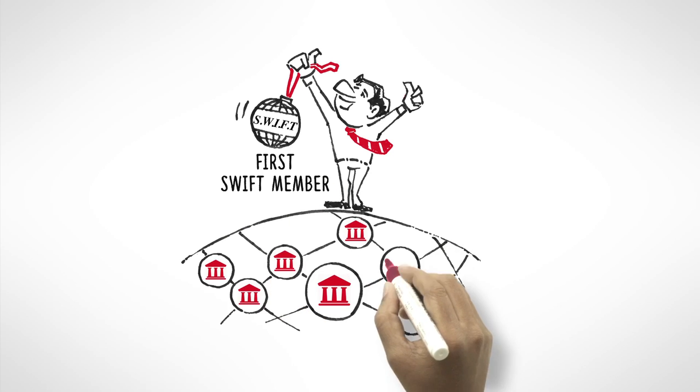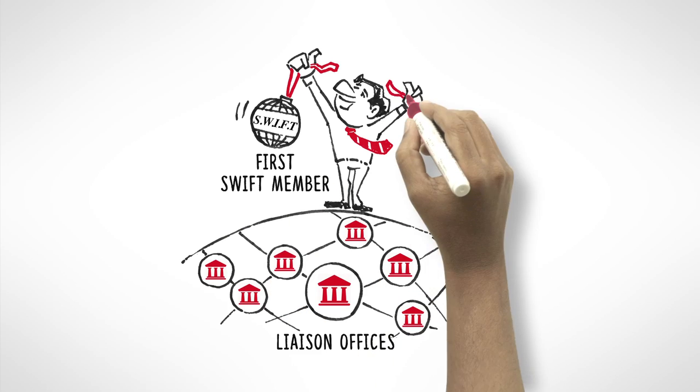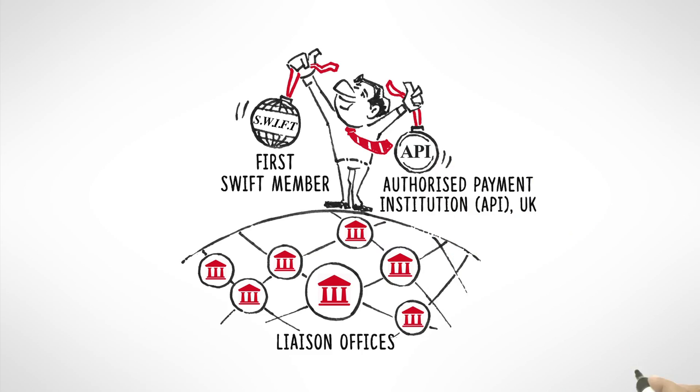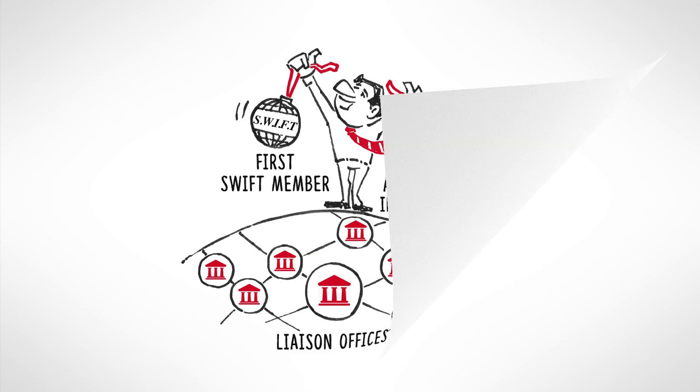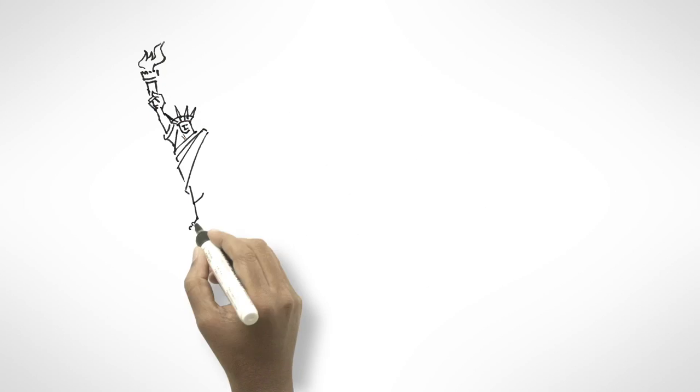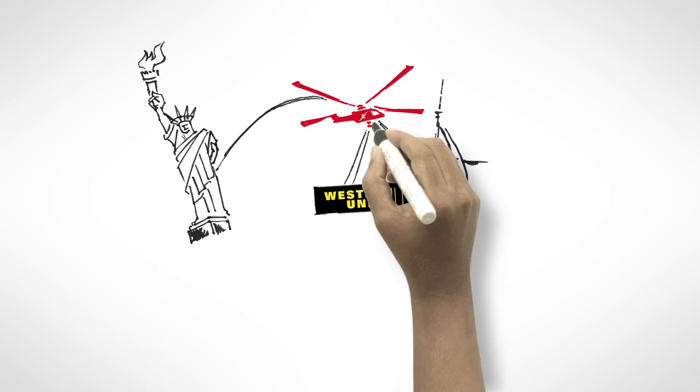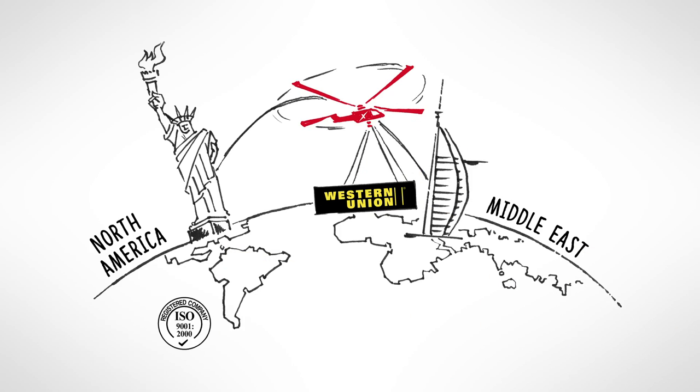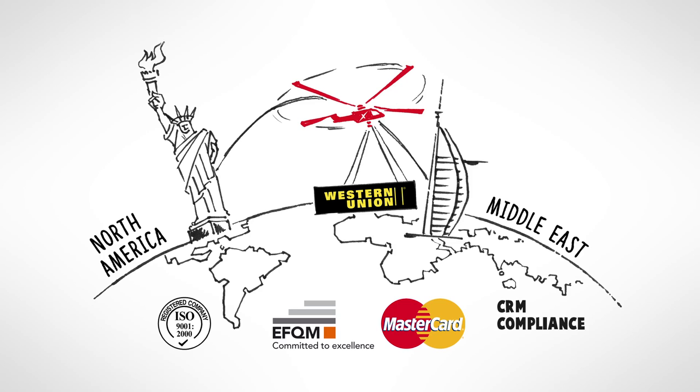UAE Exchange opened liaison offices and became an authorized payment institution in the UK. UAE Exchange was the first to bring Western Union to the Middle East, get an ISO 9001-2000 certification, adopt EFQM, have a principal membership with Mastercard, launch centralized process control, and invest in enhanced technological experience.